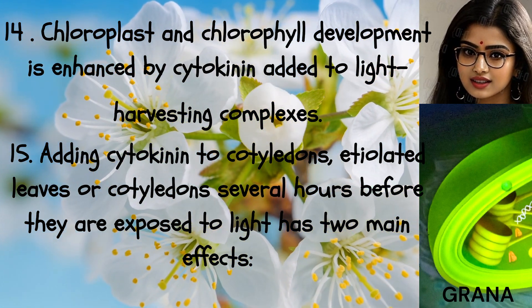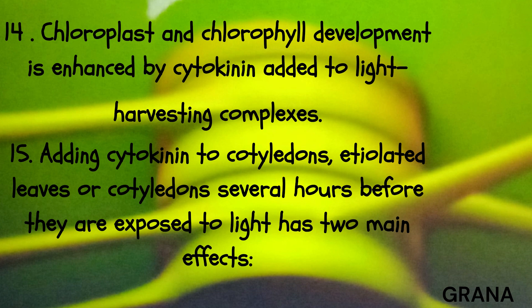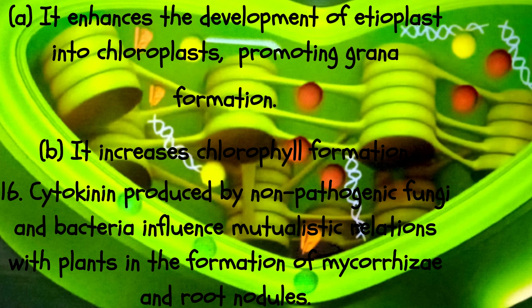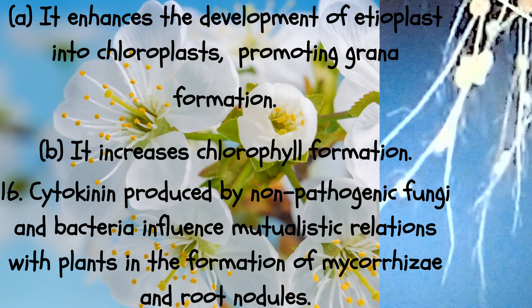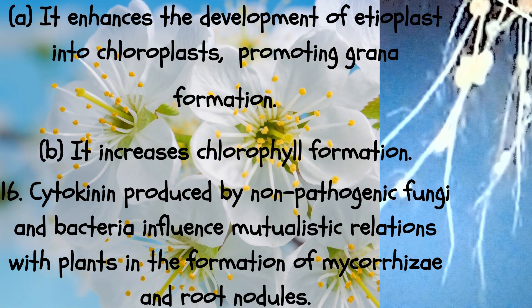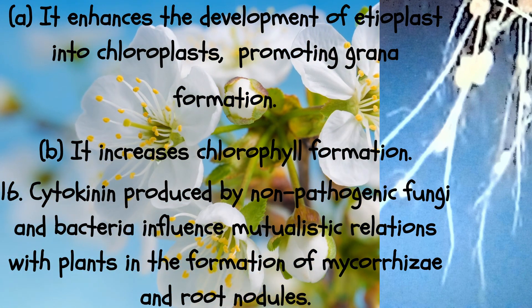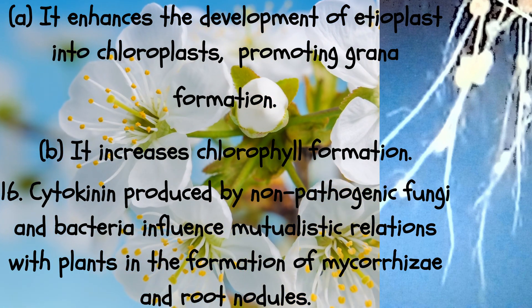Fifteen: adding cytokinin to cotyledons or etiolated leaves several hours before they are exposed to light has two main effects: (a) it enhances development of etioplasts into chloroplasts, promoting grana formation, and (b) it increases chlorophyll formation. Sixteen: cytokinin produced by non-pathogenic fungi and bacteria influences mutualistic relations with plants in the formation of mycorrhizae and root nodules.